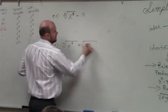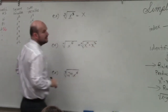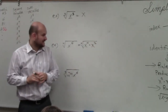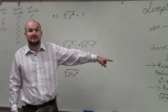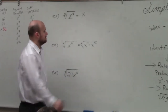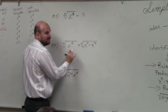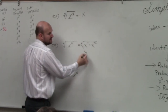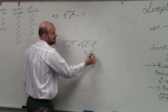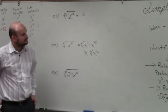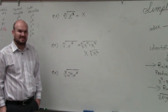I could rewrite this as the fourth root of x to the fourth times x squared. Would you guys agree that x to the fourth times x squared, based on the product rule, is x to the sixth? Yes. Now I can use my identity element. The fourth root of x to the fourth is x. I can't do anything with x squared, so that answer is x squared.